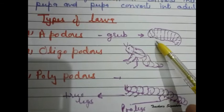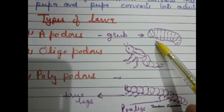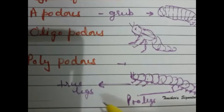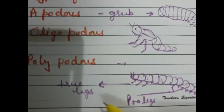In Lepidoptera, apodus means without legs; oligopodus means three pairs of legs; polypodus means three pairs of legs and supporting prolegs.